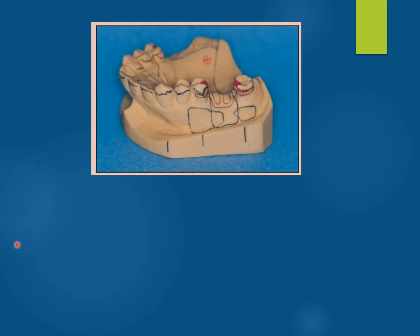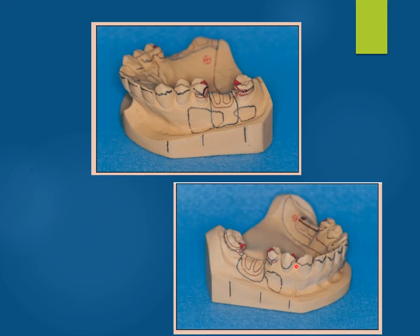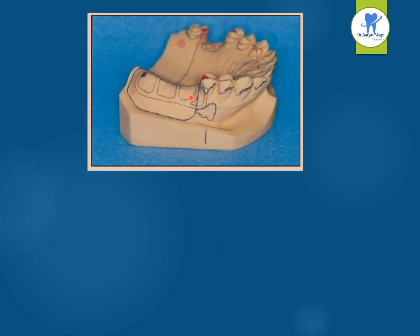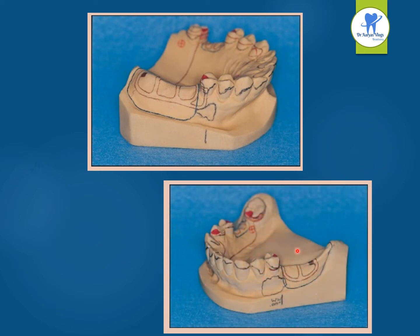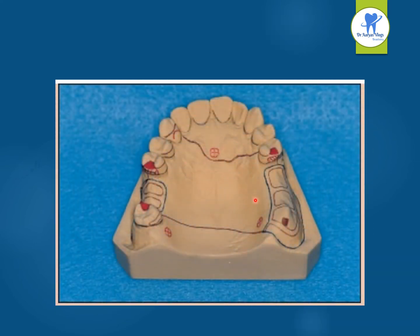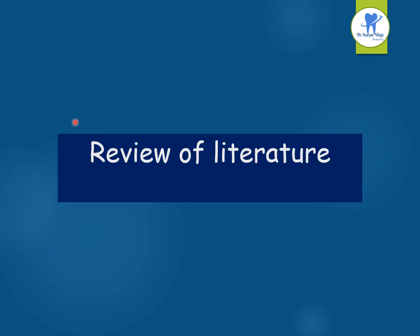This is the right lateral view of the completed maxillary design and the right lateral view of the completed mandibular design. Here is the left lateral view of the completed maxillary design and the left lateral view of the completed mandibular design. This is the occlusal view of the completed maxillary design and the occlusal view of the completed mandibular design. That concludes the design of RPD using colour coding.